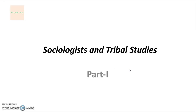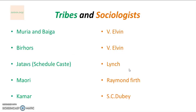Before getting into this video, make sure that you subscribe to this channel. There are five important tribes and the sociologist names who conducted the study on each particular tribe. First are Muriya and Baiga — these are very important tribes in Chhattisgarh.